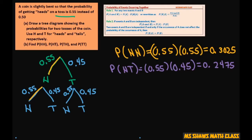And the next one's the same thing, but it's opposite here. Tails heads. So that equals 0.45 times 0.55, and that equals 0.2475.